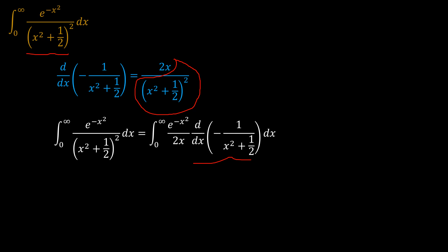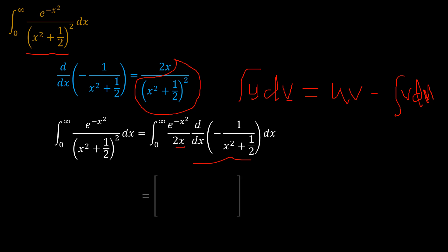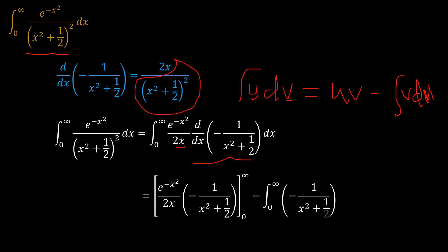This renders the problem interesting because we can now use integration by parts: the integral of u dv equals uv minus the integral of v du. Our u is e to the power negative x squared over 2x, and our v is negative 1 over (x squared plus one half). Applying the limits appropriately, I'll keep the boundary term as-is because the limit as x tends to 0 is not exactly 0, and it will interact with the succeeding terms so the entire thing goes to zero.